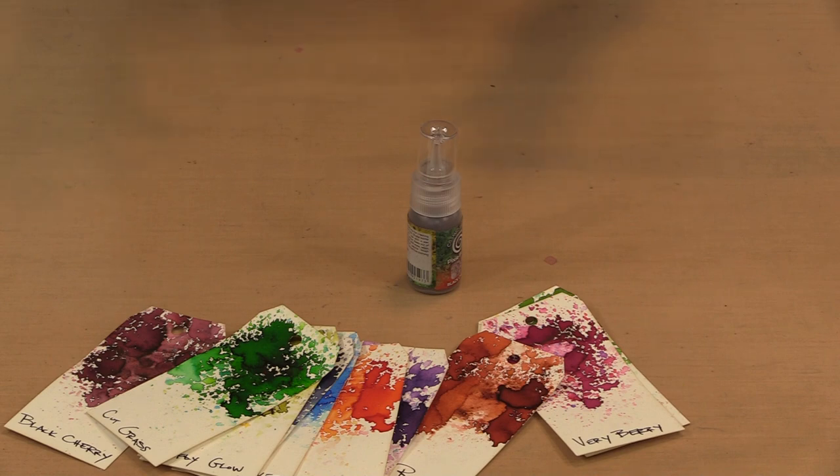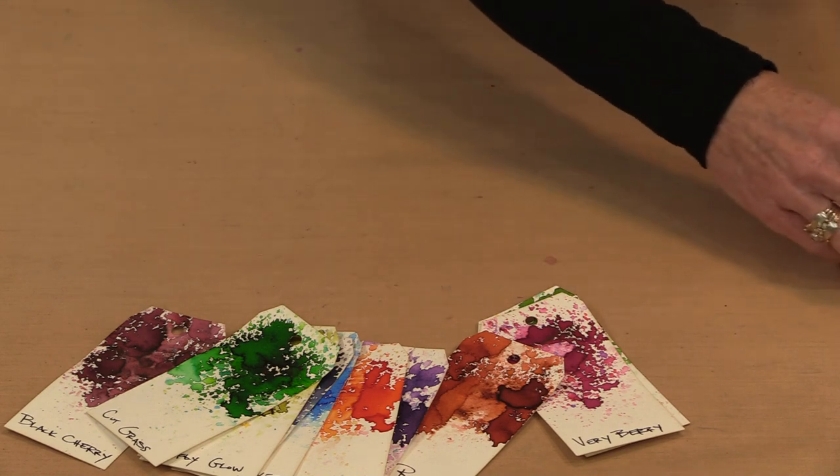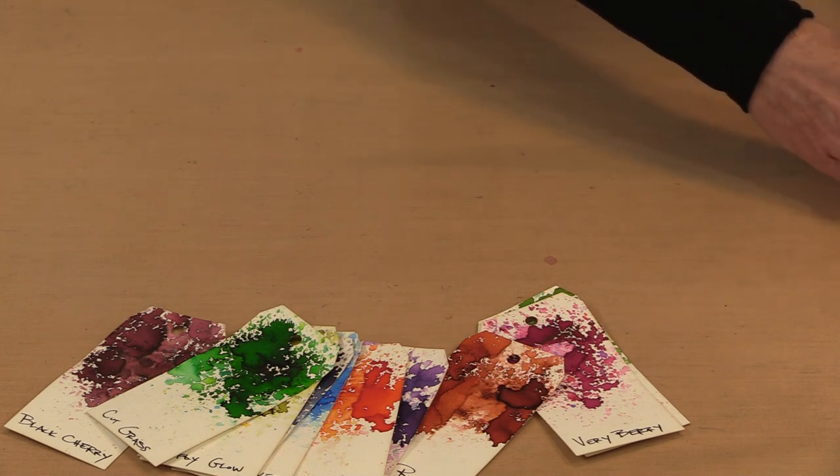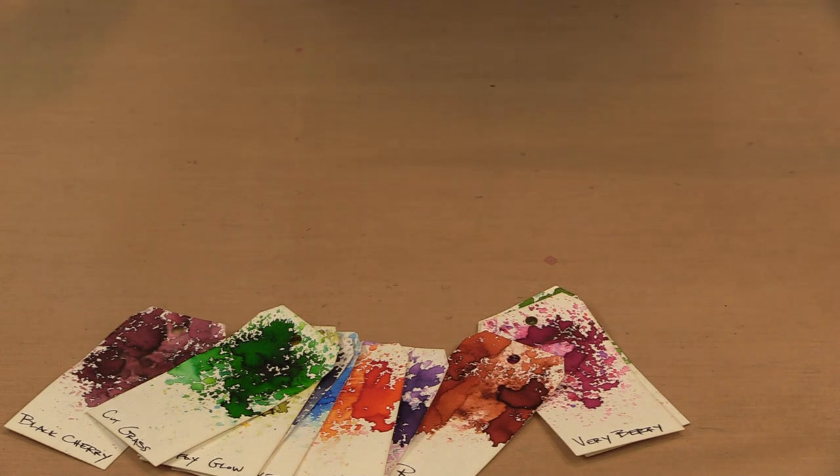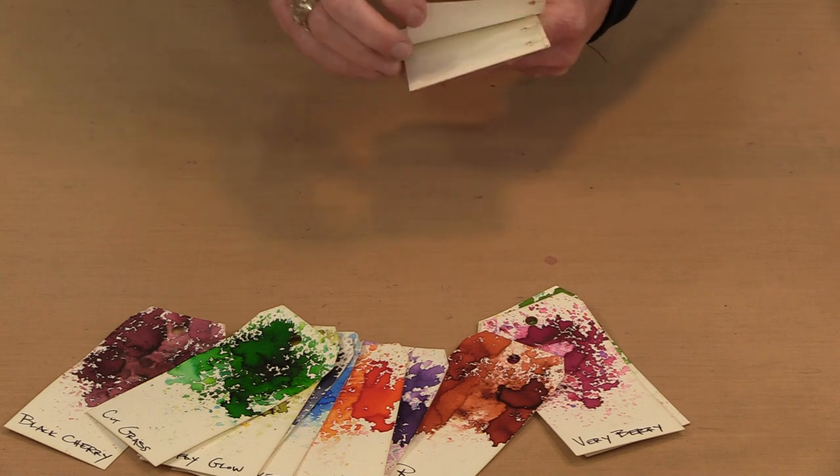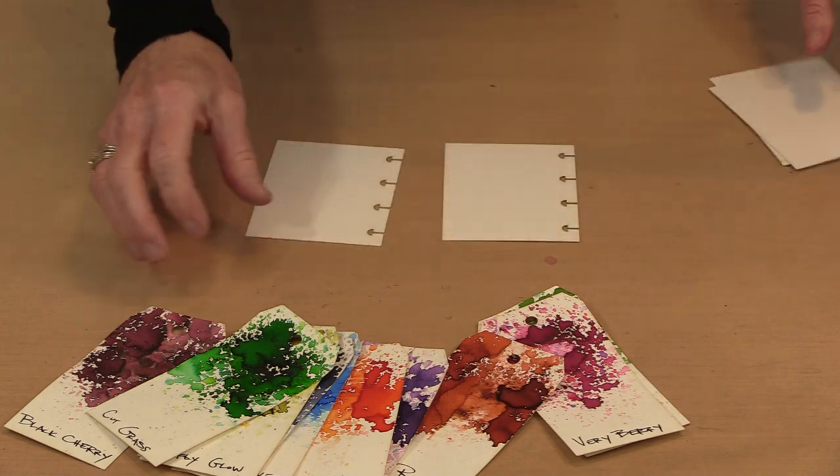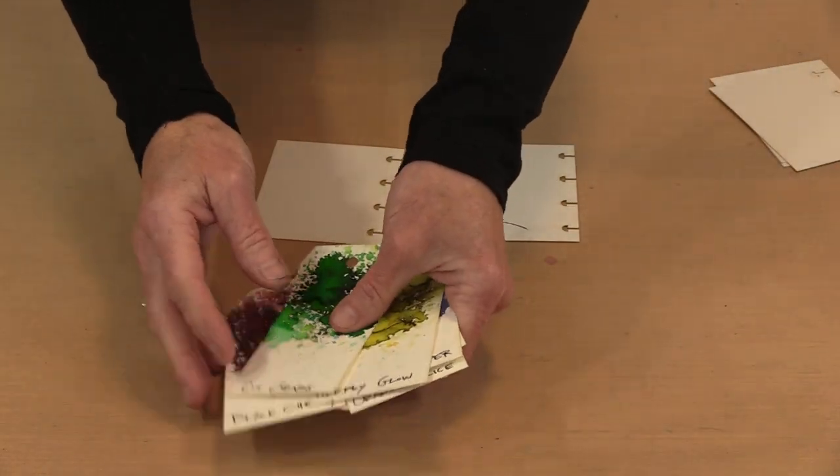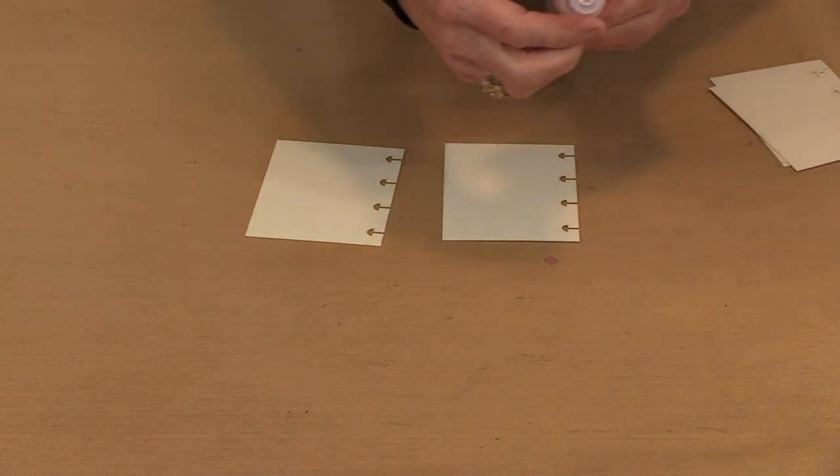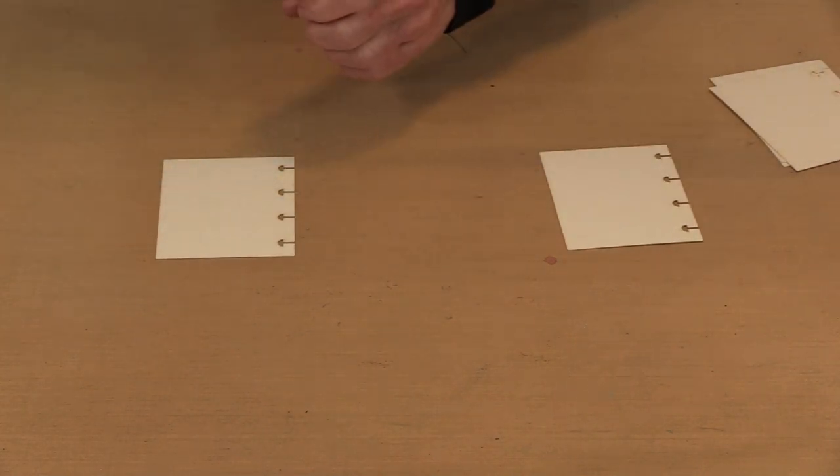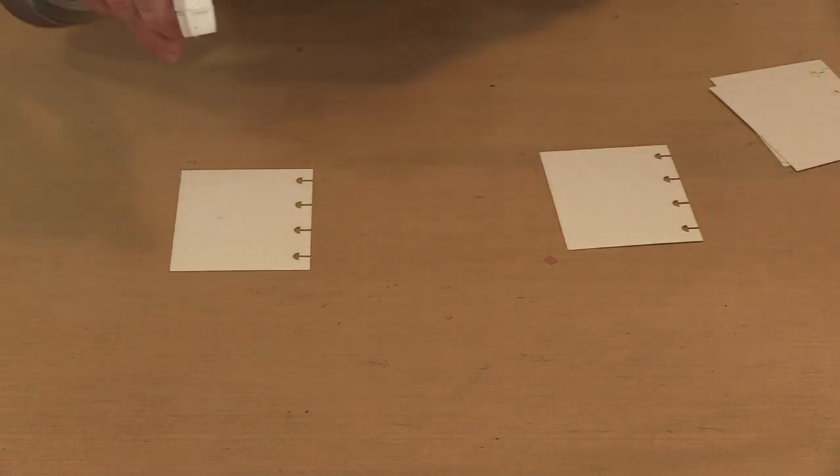Like any other powdered media, you can sprinkle pixie bursts either on a wet surface or sprinkle them on a dry surface and add water. I'm going to do both ways here for you. I've got these 3x4 Joggles disc-bound watercolor pages. This is orange slice. We'll start by putting some water on here.